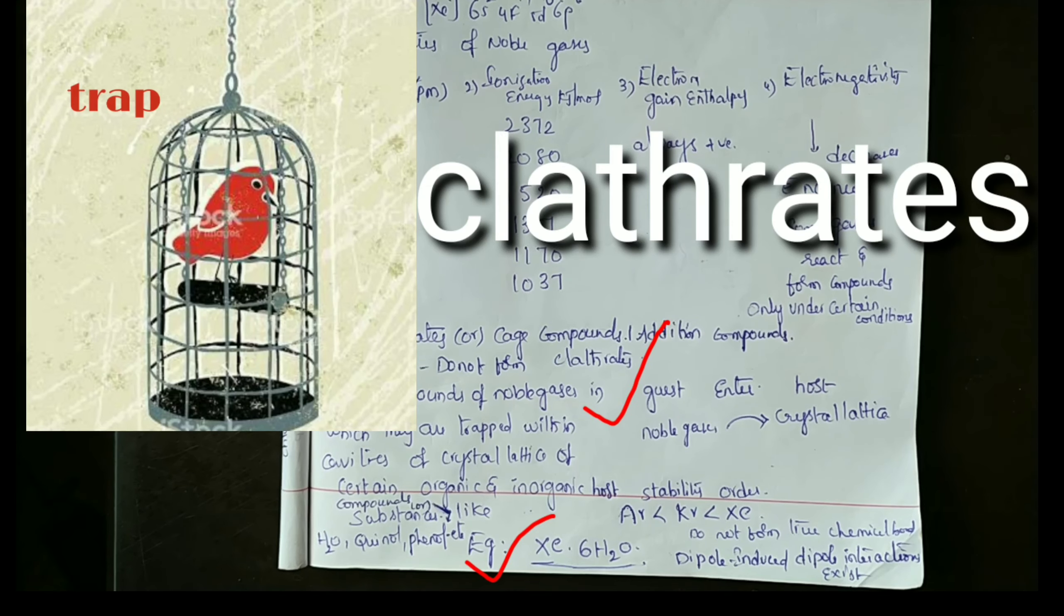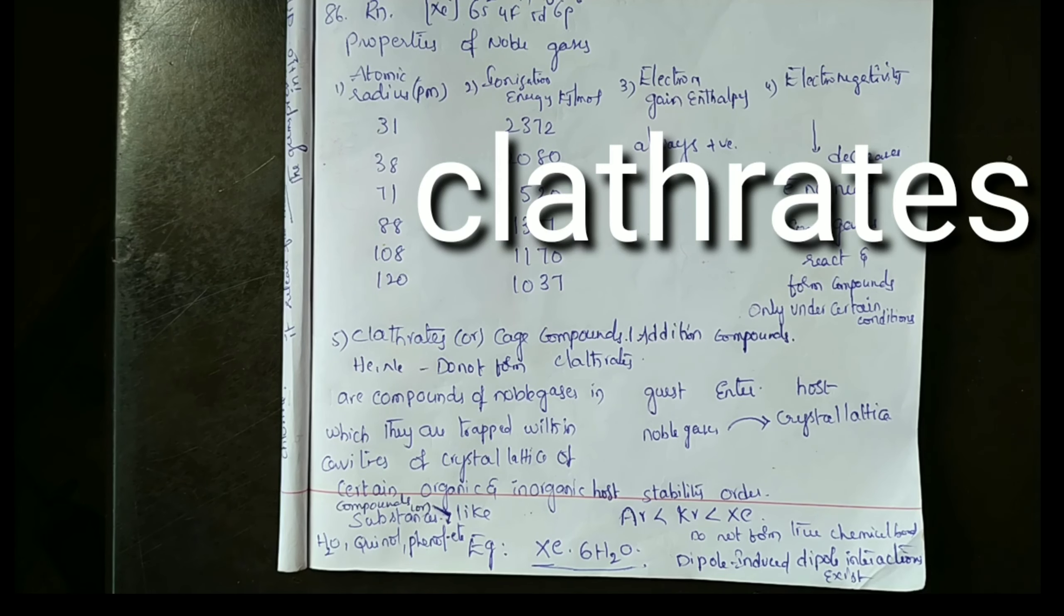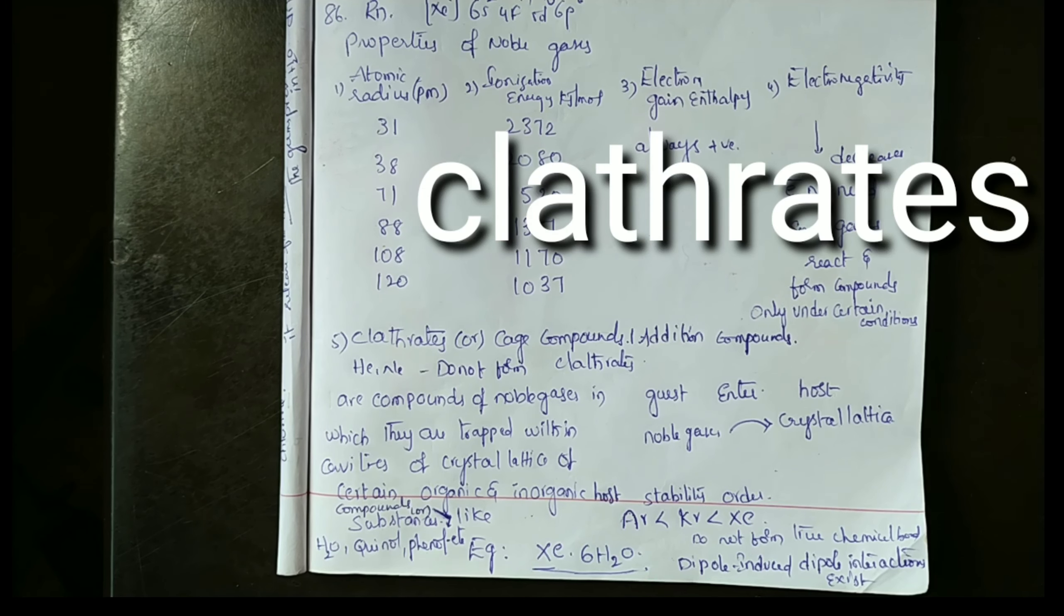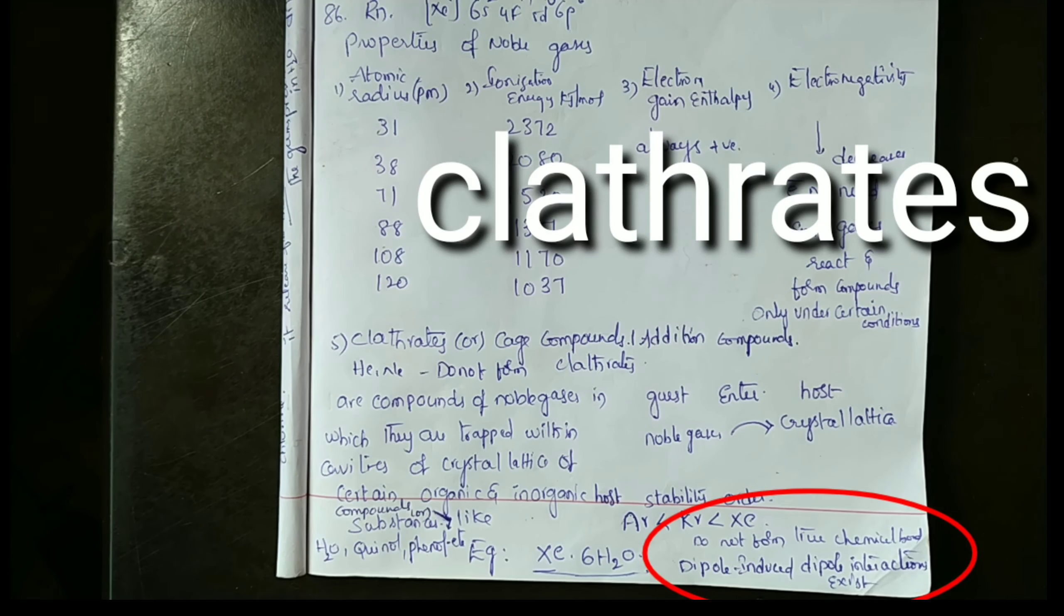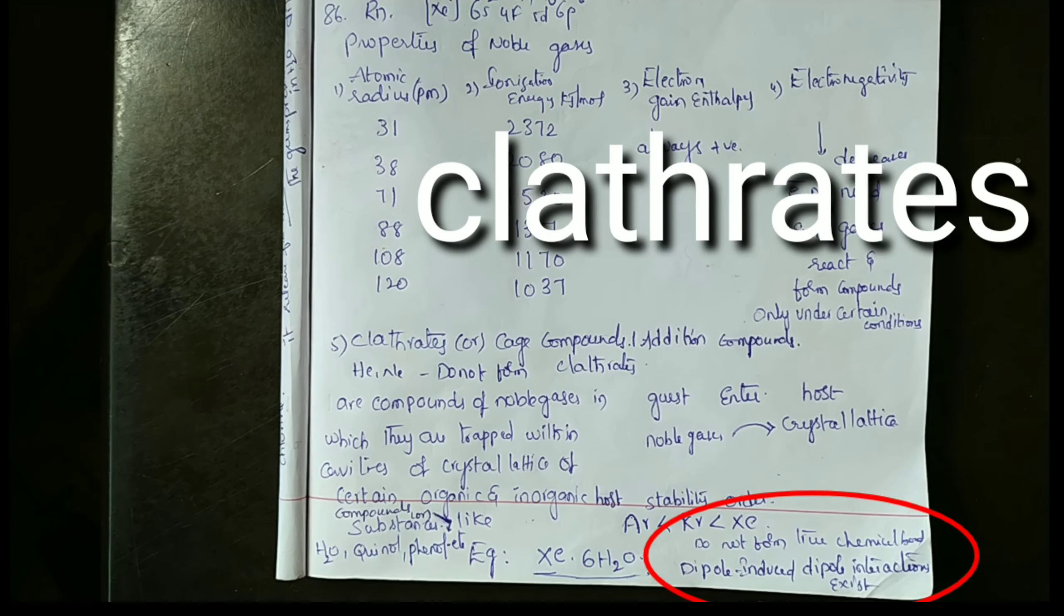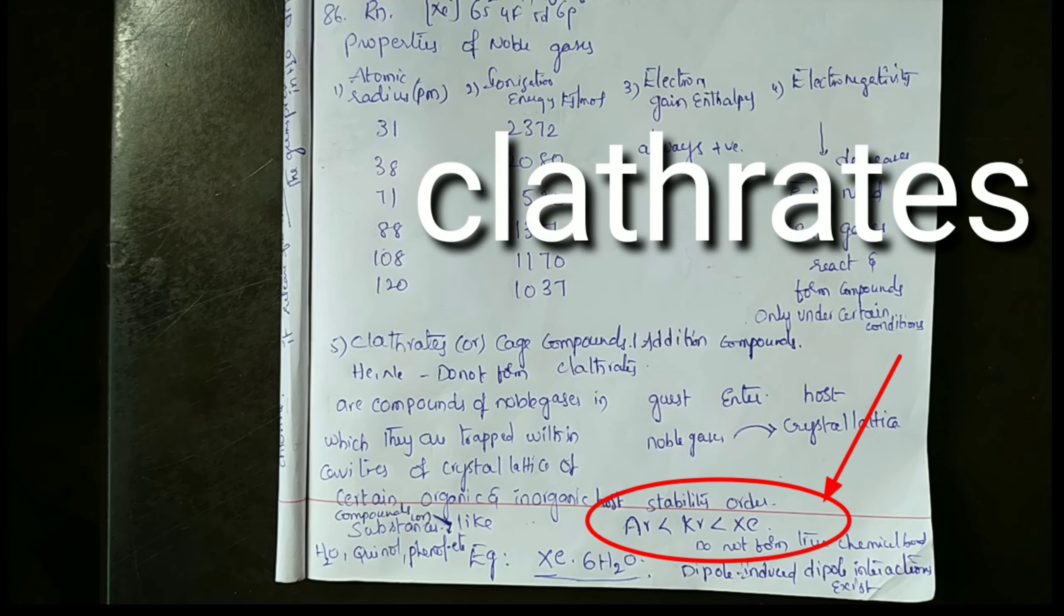Example: Xenon·6H2O. The clathrates are not formed through chemical bonds. Dipole-induced dipole interactions exist in clathrates. This is the stability order of clathrates.